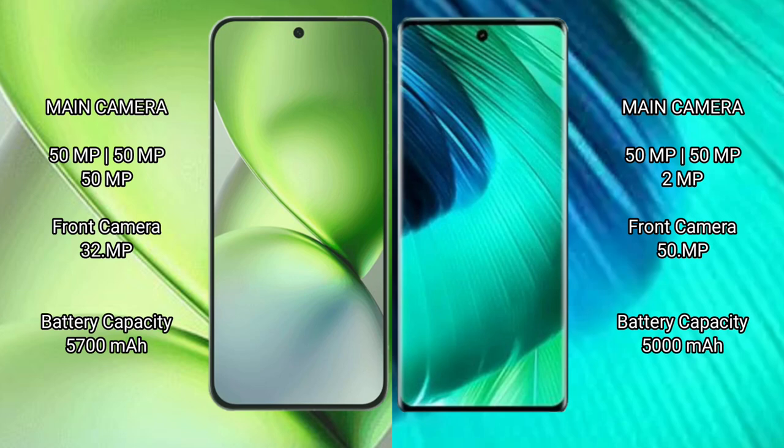The Vivo X200 Pro Mini packs a 5700mAh battery with 90W fast charging support, while the Vivo V30 has a 5000mAh battery with 80W fast charging support.